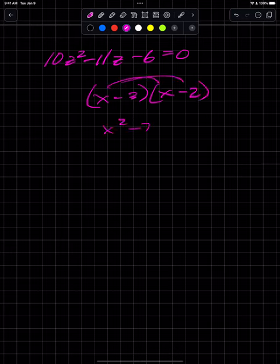Minus 2x minus 3x and then plus 6. Note we're going to review this again later where these two pieces add together to become the middle term. So that's negative 5x plus 6.